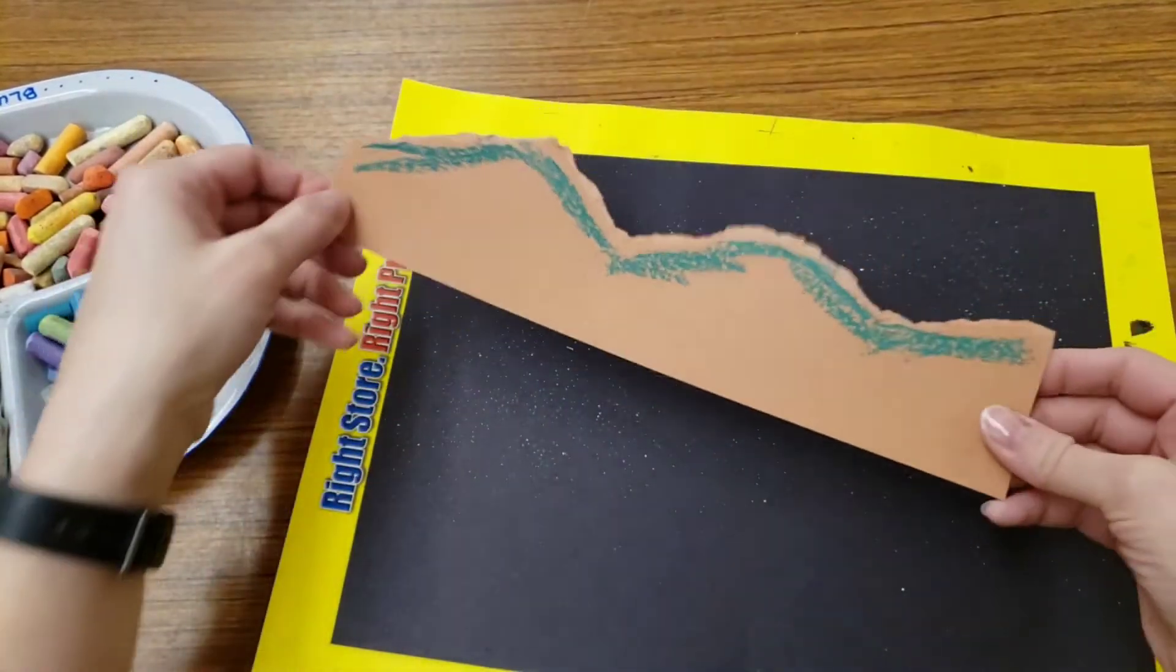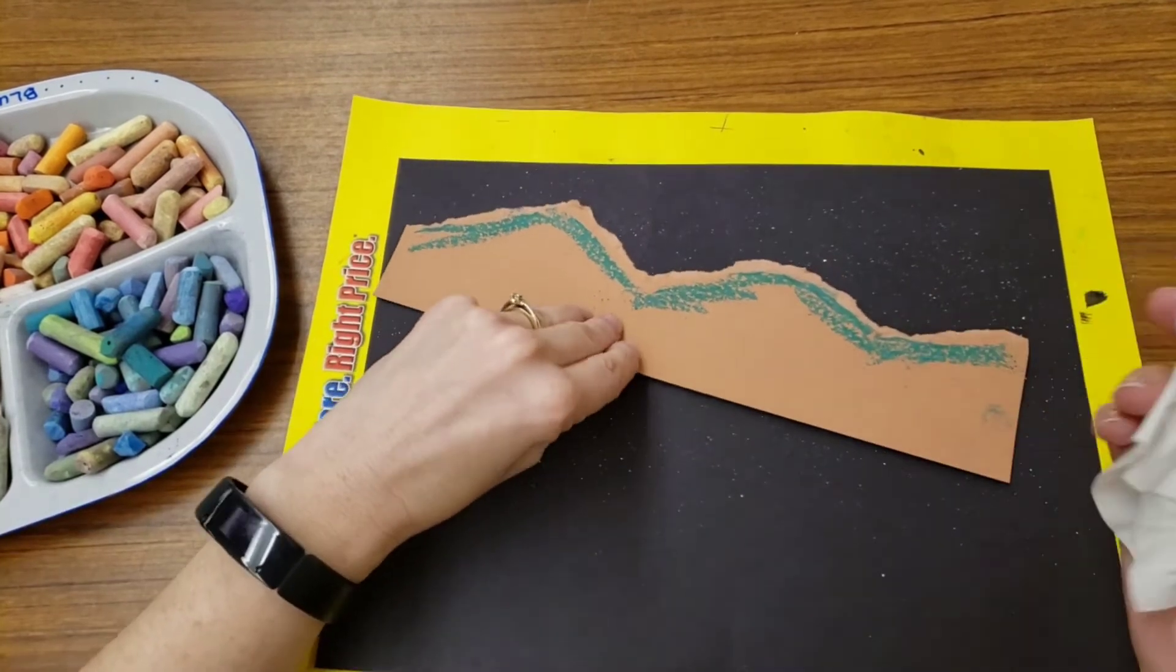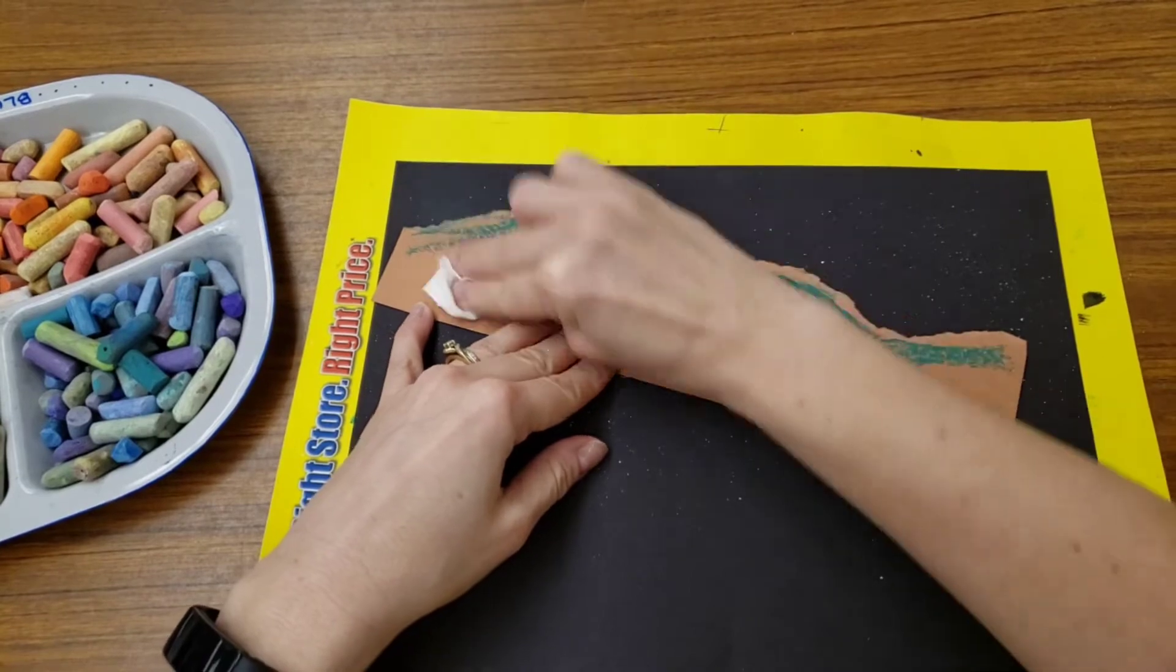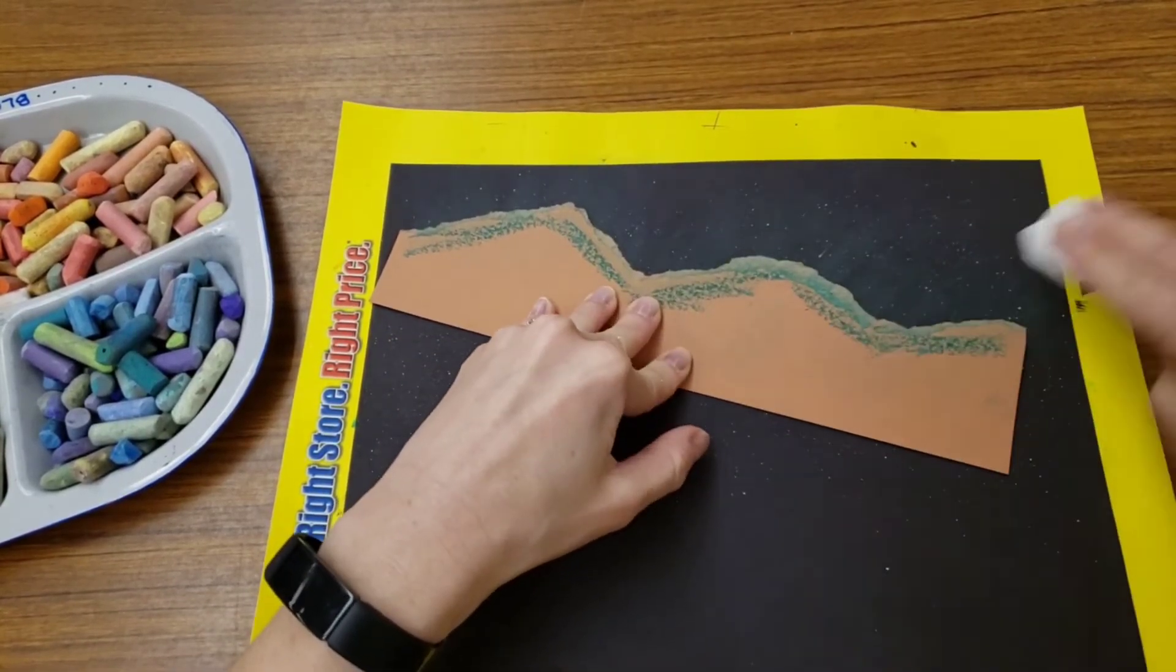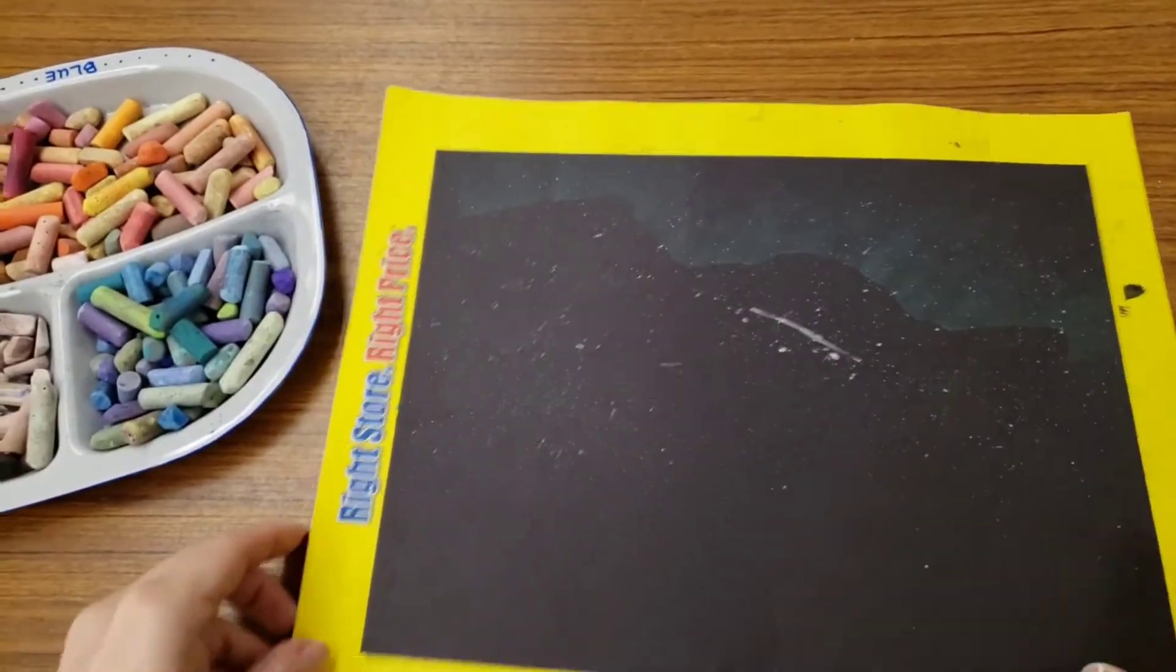Back to your project. Lay it down somewhere on your night sky. You will have a piece of tissue or paper towel. We're going to start at the chalky part and push up, up, and away. When we lift up, we have a little bit of color there.